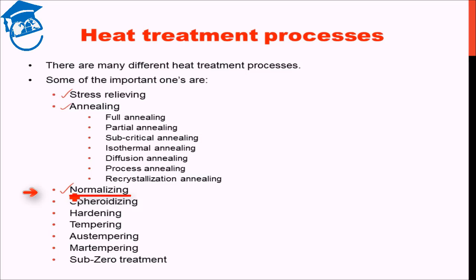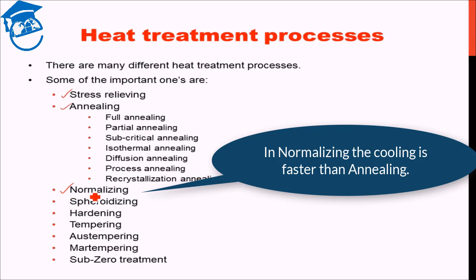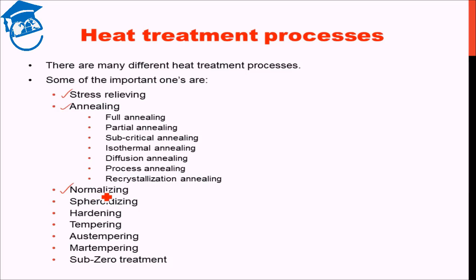The schedule for normalizing is similar — we heat it and keep it at a particular temperature for a certain amount of time, then cool it. But in normalizing, the cooling is faster compared to annealing. Normally, we cool it in air rather than in the furnace.